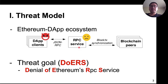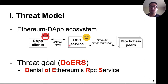We consider a threat model in which there is a malicious DApp client who can send crafted requests to the RPC service and cause the service to slow down or experience an outage.